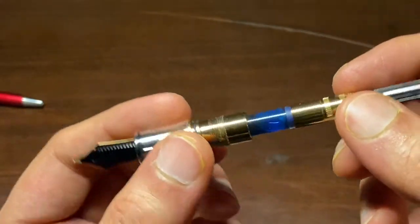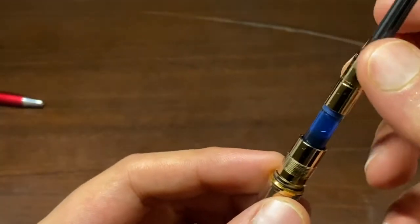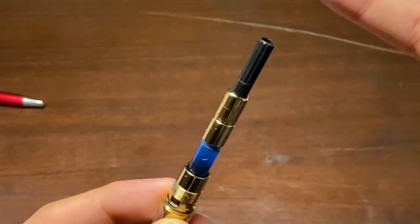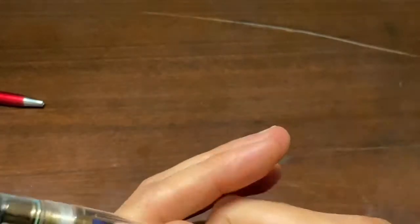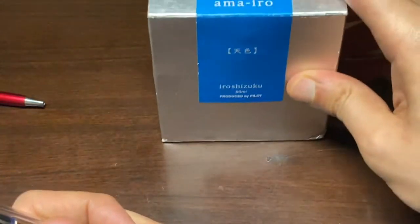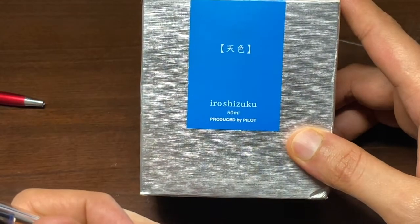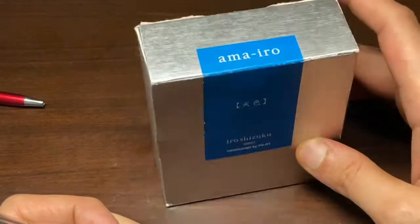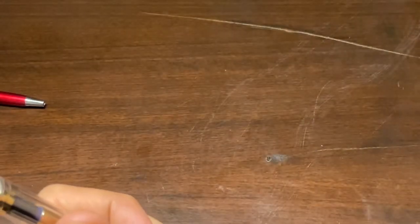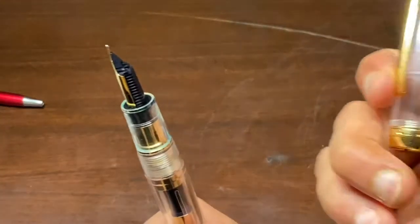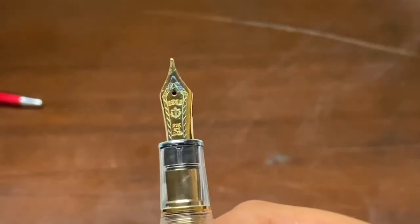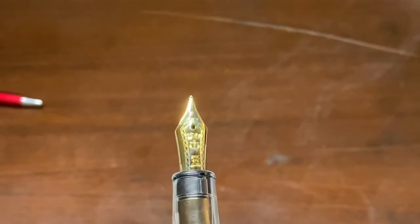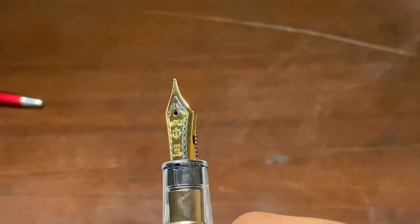Now the ink I'll be using for this pen today is the Ama-iro from Pilot, a very nice thin light blue color. I think the nib on this is gorgeous. It's a 21 karat nib as I told you before and the feed is ebonite.